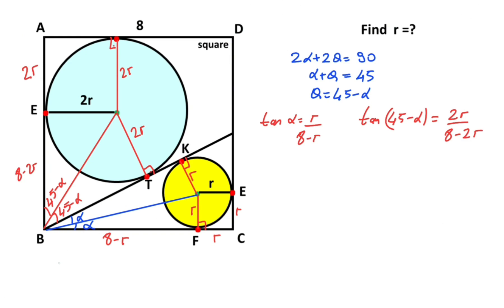Tangent of 45 minus alpha equals 2r over 8 minus 2r, right? Let's remind you: tangent of a minus b must be equal to tangent a minus tangent b over 1 plus tangent a times tangent b.